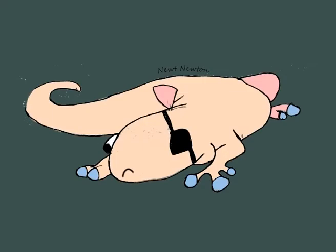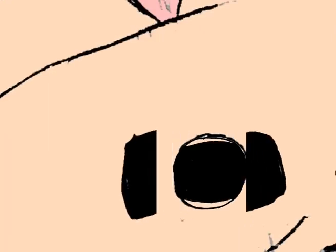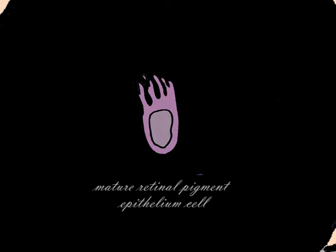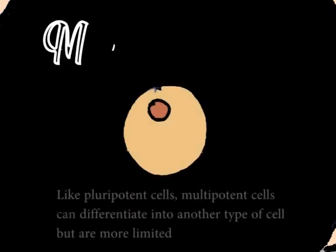Take newts for example. A specimen has lost its eye after a fight with another newt. Thanks to transdifferentiation, it can grow it back. The stress caused by the injury will act as a cue for RPE cells to change their gene expression. Just like during initial differentiation, transcription factors and the conditions in the cell's microenvironment will influence the expression of certain genes, and the cells revert to a state of multi-potency.